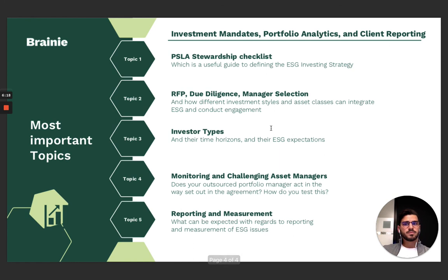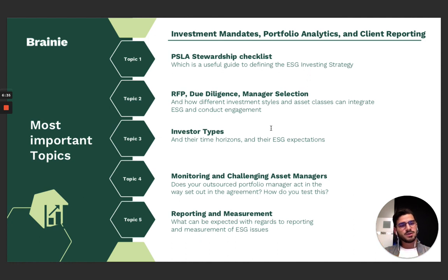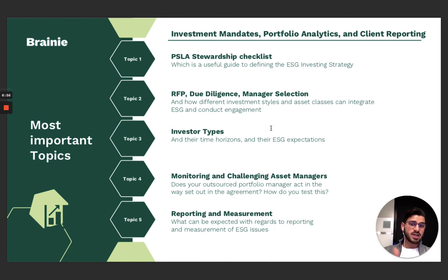We haven't seen this slide in a while — this is the five most important topics. For this chapter we did one because it's a shorter chapter. But even if we have five topics that we say are the most important ones, we really encourage you to read the entire curriculum. If we had to boil it down to five topics, it would be: the PLSA stewardship checklist, the RFP due diligence and manager selection process, the investor types and their investment time horizon and ESG expectations, monitoring and challenging asset managers, and finally reporting and measurement of ESG integration. Thank you.